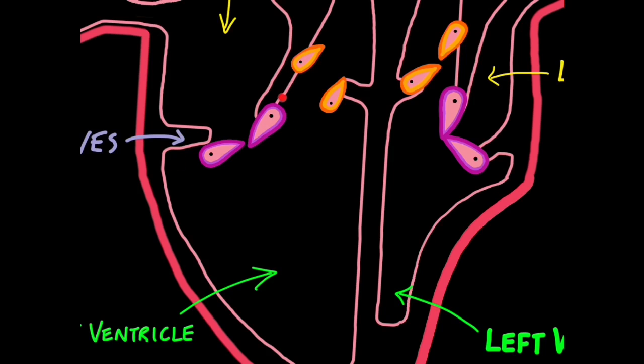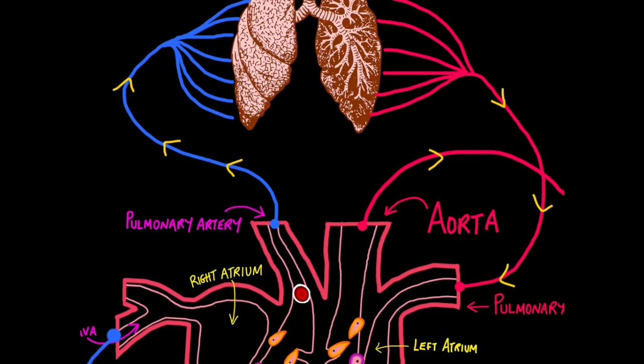These valves are called atrioventricular valves or AV valves, and these valves are called semilunar valves. These would be the right AV valves, and these would be the left AV valves. Our red blood cell then enters a rollercoaster ride around the circulatory system. It travels from the pulmonary artery away from the heart to the lungs.